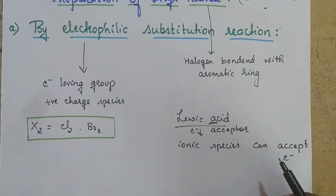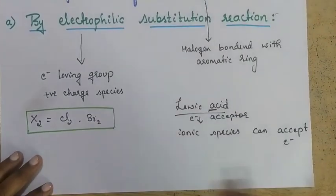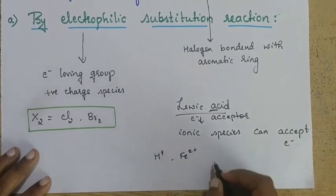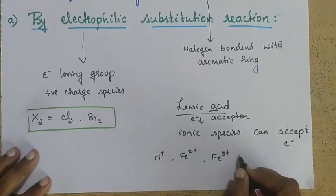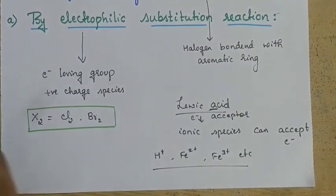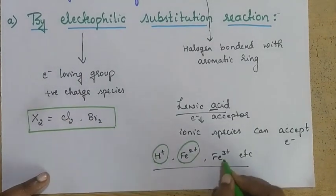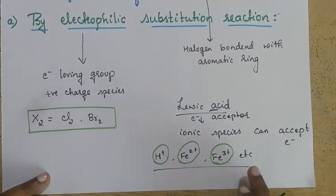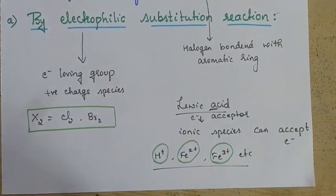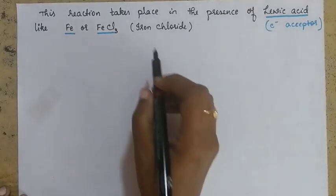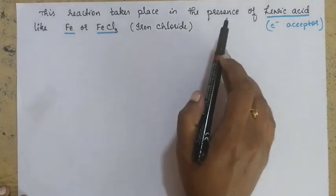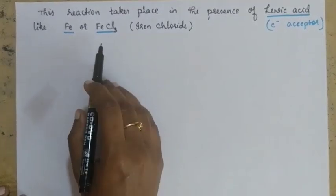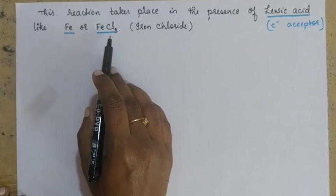Lewis acid is the ionic species which can accept electrons from a donor. For example, species like H⁺, Fe²⁺, or ferric ion are ready to accept electrons, and you can observe all these are positively charged species. That's why they are ready to accept electrons — these kinds of species are known as Lewis acids. In this reaction we are going to particularly use Lewis acid which is iron(III) chloride, FeCl₃.